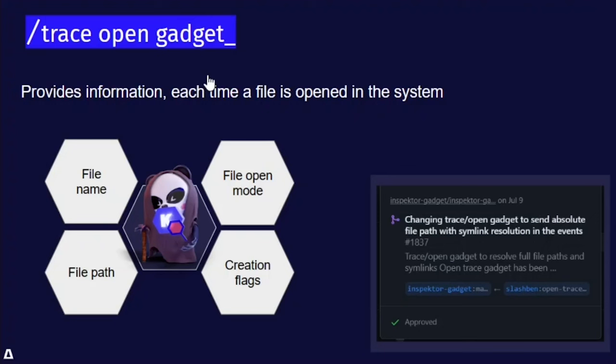Let's take a more detailed look at how Cubescape utilizes Inspector Gadget. Cubescape uses the trace open gadget, which gives it information about the files opened by the system — including file name, file path, user ID, and group ID. On the right you can see a merged PR from Ben Hershberg, lead Cubescape maintainer, co-founder, and CTO of ARMO. This highlights the beauty of using open source projects: if something is not giving you everything you need, you can change it upstream to benefit everyone.